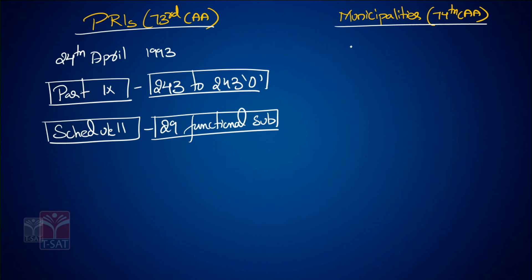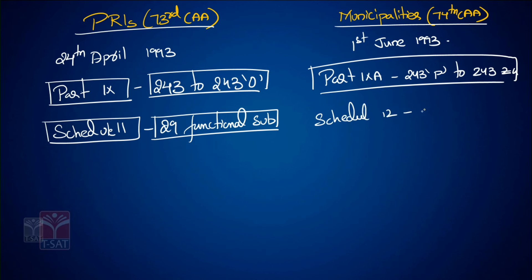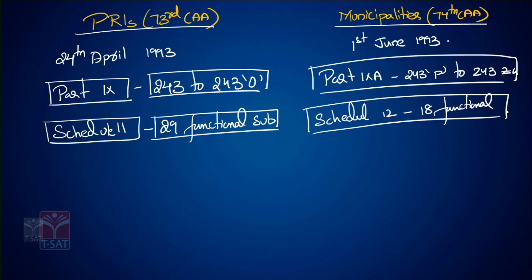Coming to municipalities, the 74th Amendment came into force on 1st June 1993. It added Part 9A from Article 243P to Article 243ZG. The 74th Amendment Act also added Schedule 12, which consists of 18 functional subjects to be performed by municipalities.